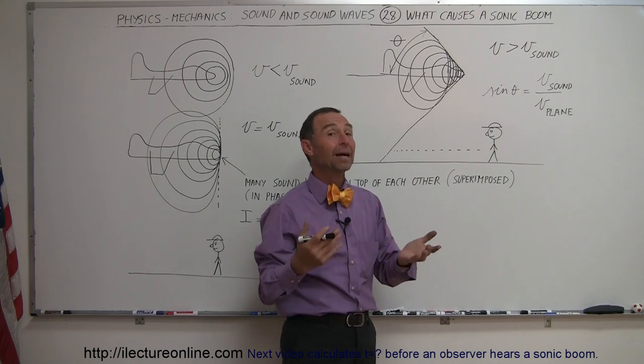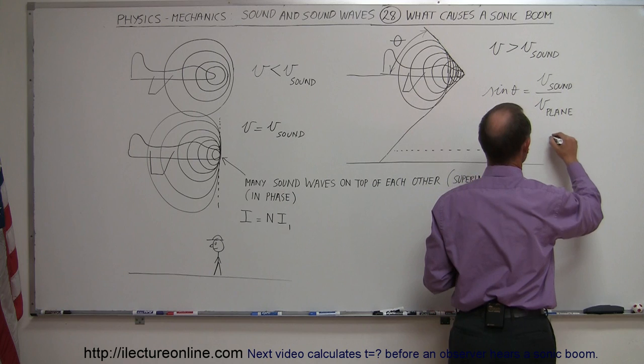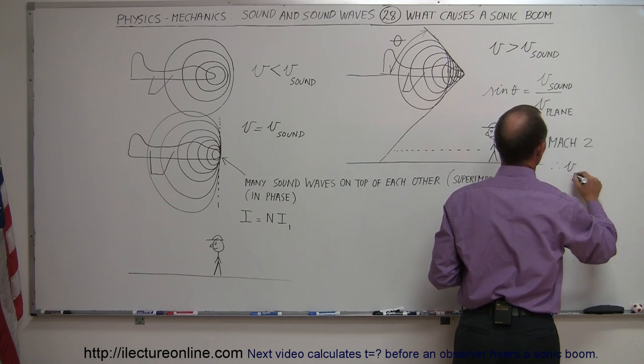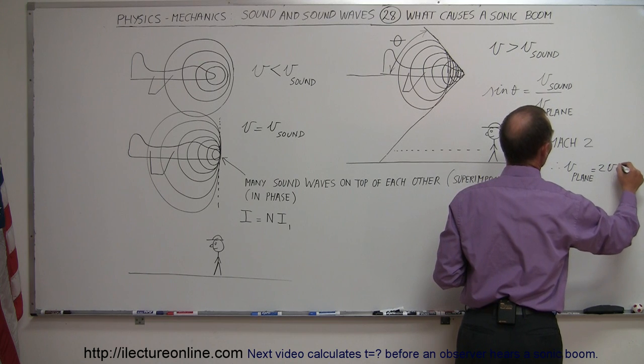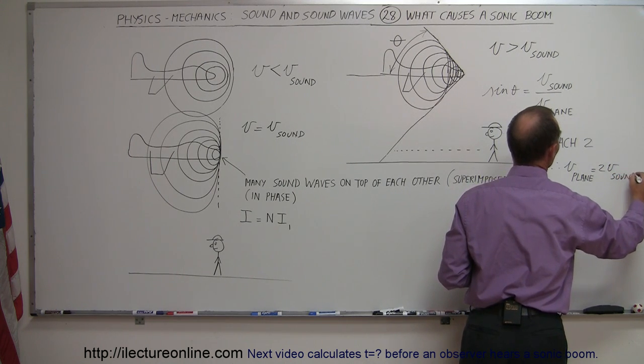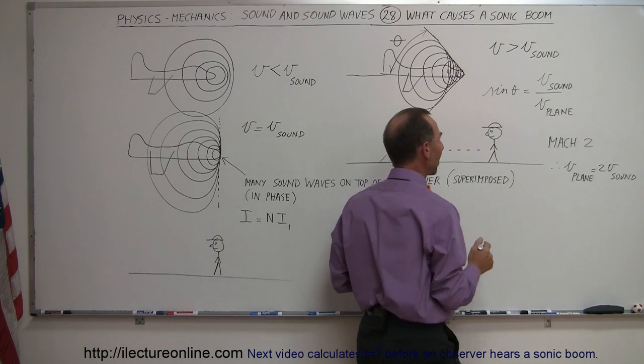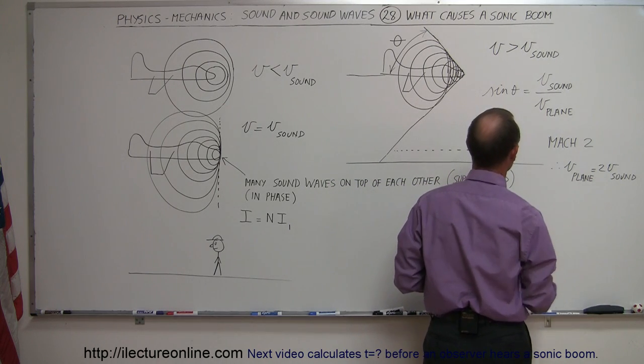For example, let's say that a plane is flying at Mach 2. Mach 2 means twice the speed of sound. That implies that the velocity of the plane is equal to two times the velocity of the sound. And let's find out what the size of that cone will be, what will be the angle of that cone-shaped sound boom that flies along with the plane.